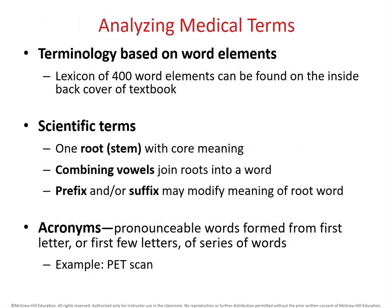A helpful tool is the glossary in the back of your textbook, with over 400 words and components of words you can use to figure out meanings. Scientific terms are often formed by adding prefixes and suffixes to a root or stem. We also use a lot of acronyms — for instance, a PET scan is more formally called a positron emission tomography scan, but we just say PET scan.